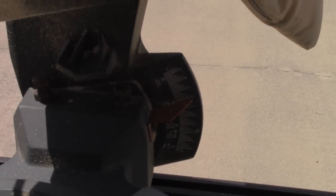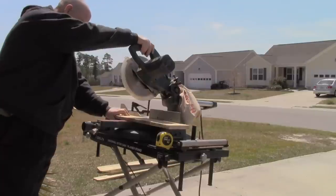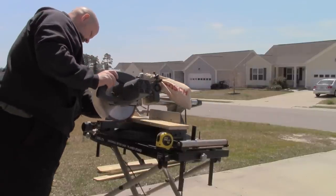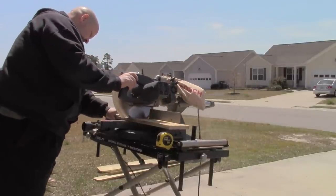Now turn your miter to 15 degrees in the other direction so you can cut your front and back and roof line.